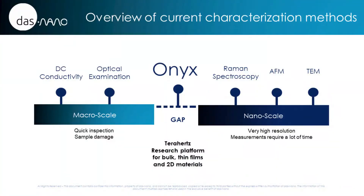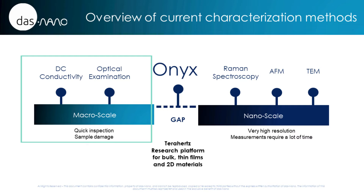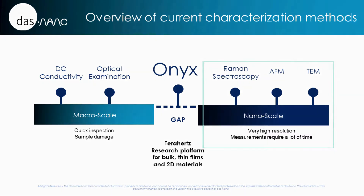Current characterization techniques can be divided in two main groups. On the one hand, macroscale techniques, such as the four-point probe method or Baden-POP, which allow a quick inspection but do not provide all the required information. On the other hand, we have nanoscale techniques, such as Raman spectroscopy, AFM, and TEM, which allow a very high resolution but measurements require a lot of time.